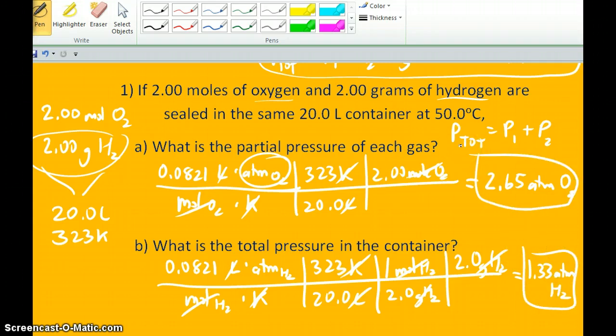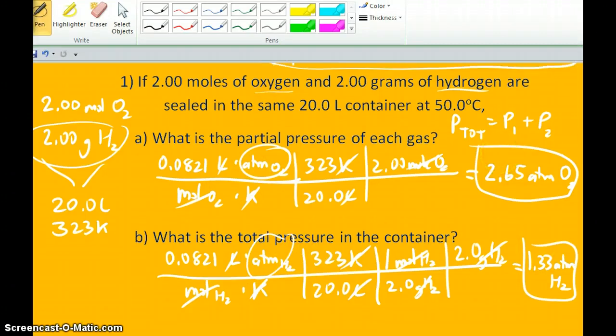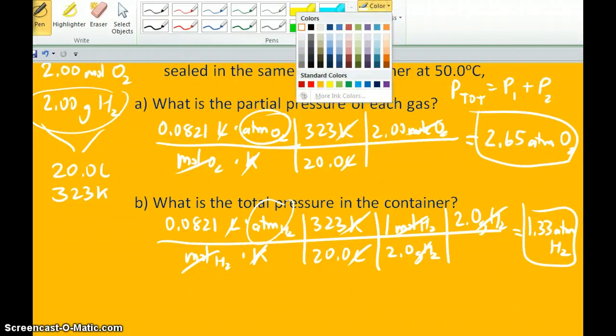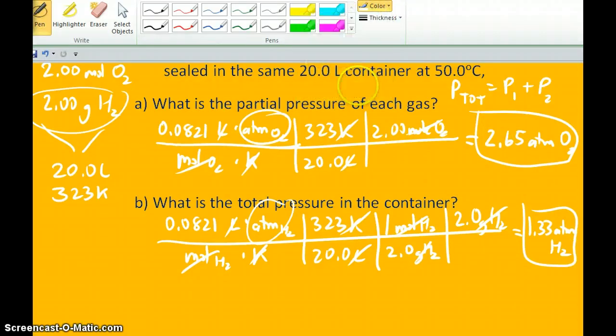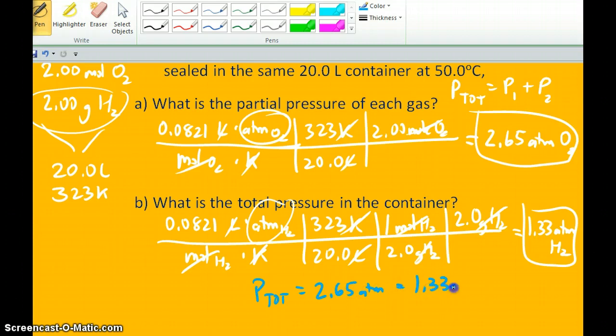namely, what is the partial pressure of each gas? Easily found from the ideal gas law - if I use the moles of each gas, I'll get the pressure of each gas. And the second part of the problem, the part that's Dalton's Law, is extremely simplistic. Because of course, Dalton's Law tells us that the total pressure in this container is merely a sum of the two partial pressures. And since we know those two partial pressures, we can easily calculate that there are 3.98 atmospheres of pressure in this container.